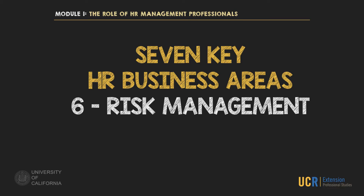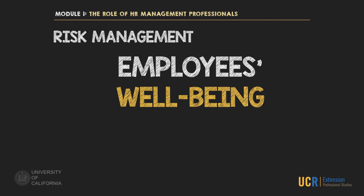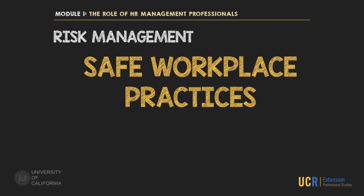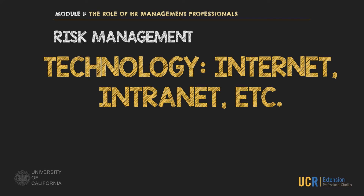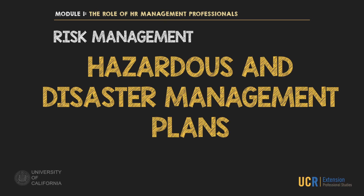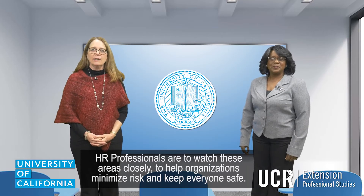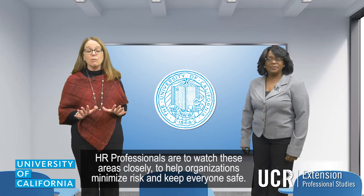The sixth key HR business area is risk management, which considers the health, safety, and security of the organization and the individuals associated. This includes the well-being of employees, hiring practices, safe workplace practices, workplace violence, use of the internet, intranet, and other technology, hazardous and disaster management plans, and more. HR professionals are to watch these areas closely to help organizations minimize risk and keep everyone safe.